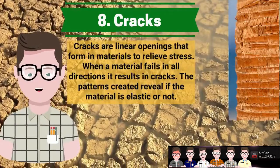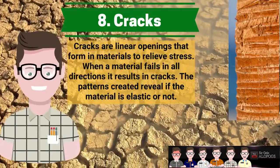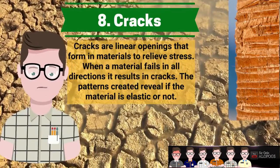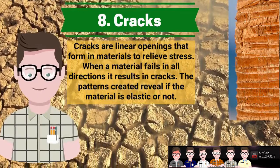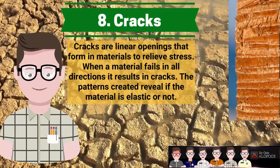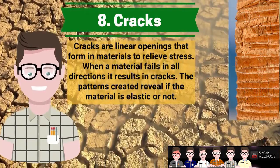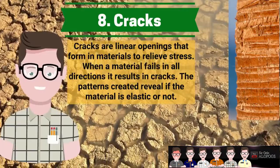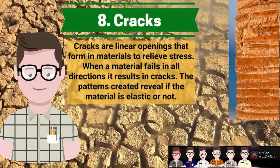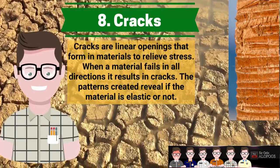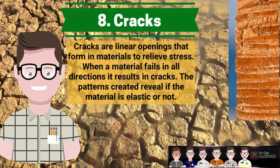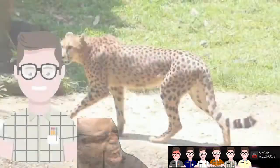Cracks are linear openings formed in materials to alleviate stress. When a material fails in all directions, cracks occur. The patterns produced indicate whether or not the material is elastic. Examples include broken earth, palm tree bark, and coconut shells.